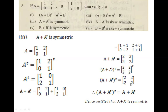Students, remember that A being symmetric is not what is given here — it is A + A^T that we are checking for symmetry. So first we find A + A^T, and then we take the transpose of A + A^T. The transpose of A + A^T equals A + A^T, which means it is verified that A + A^T is symmetric.